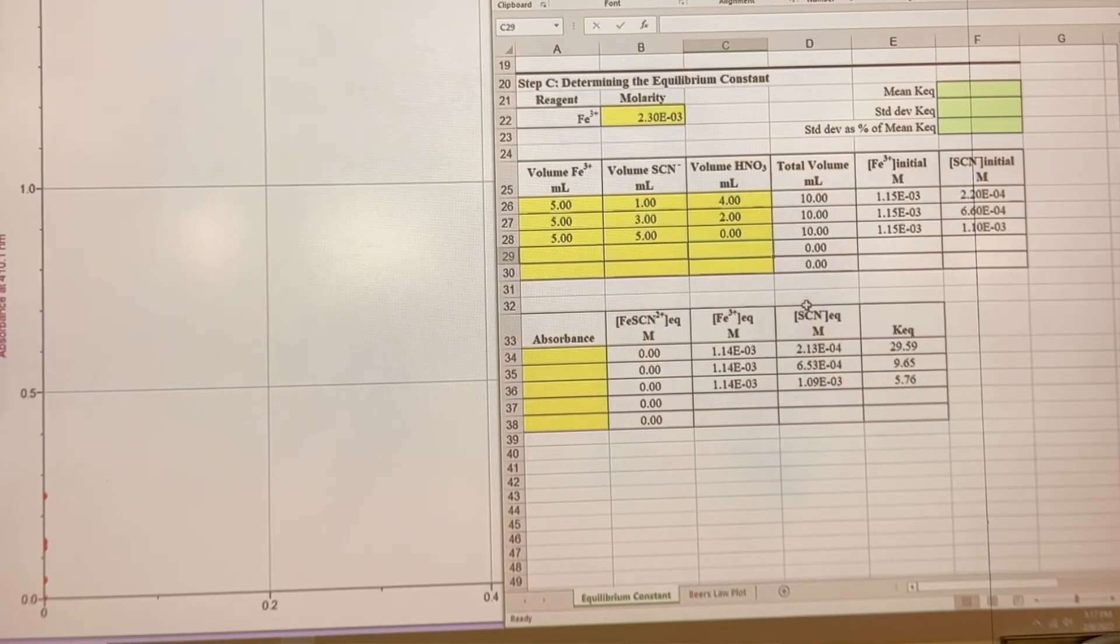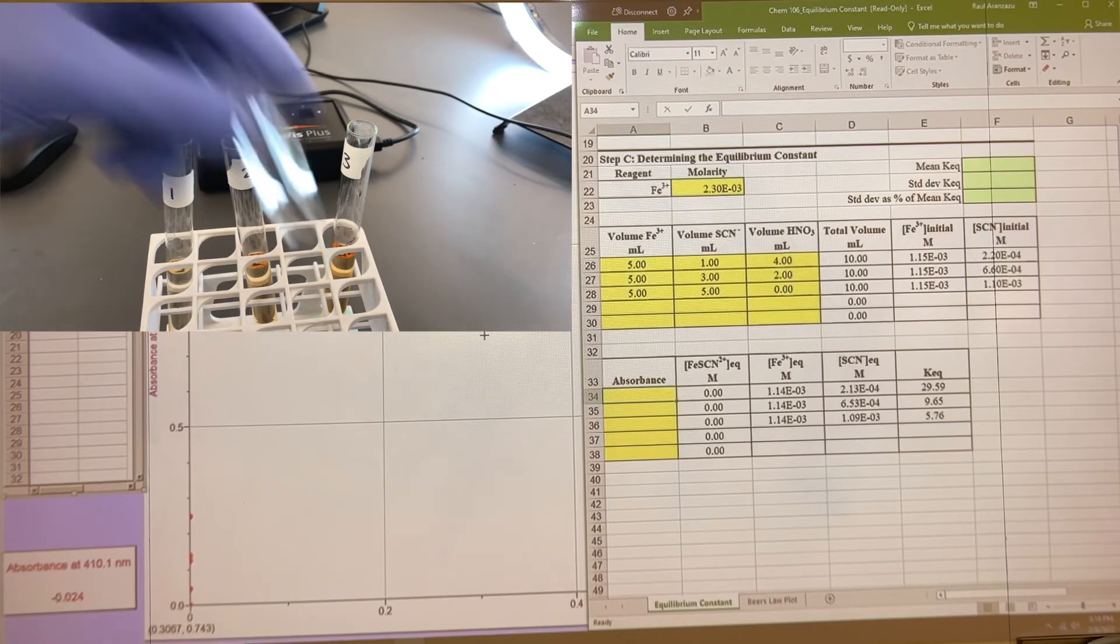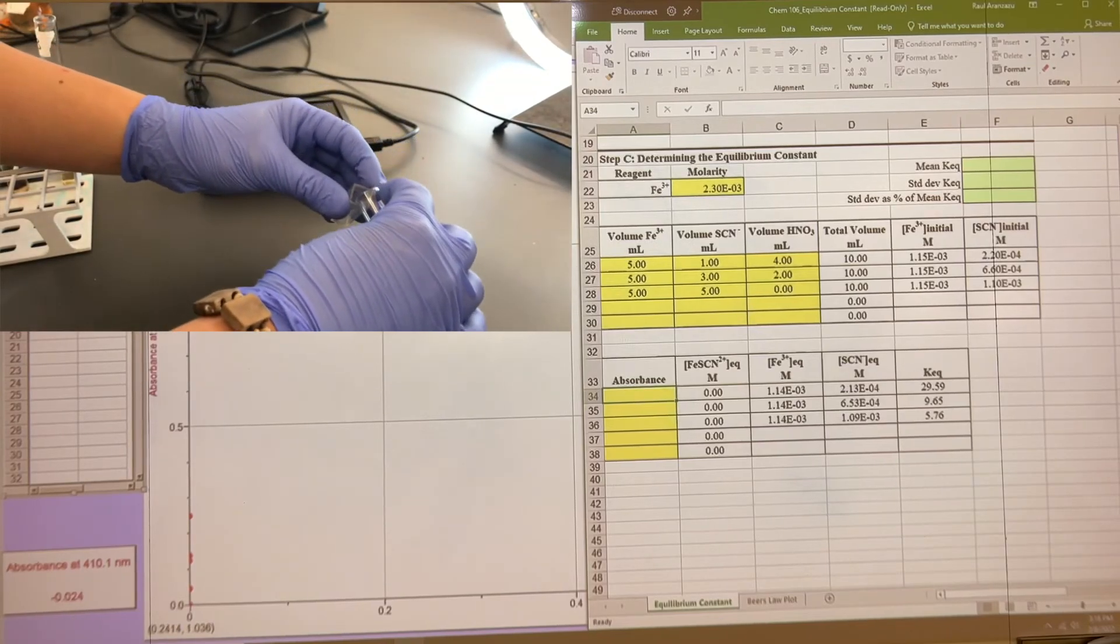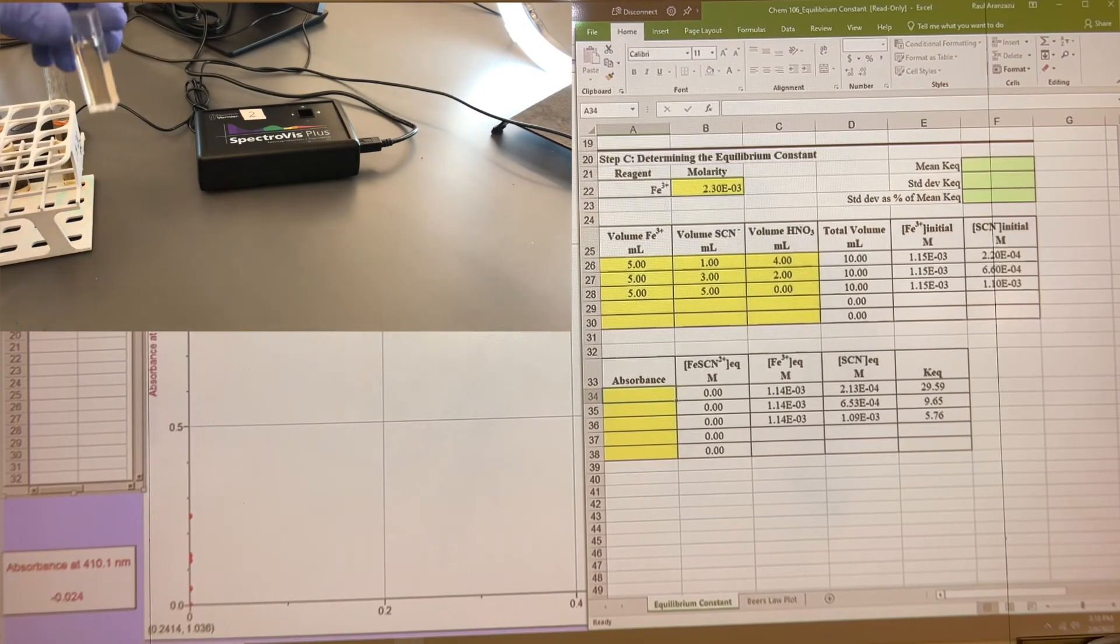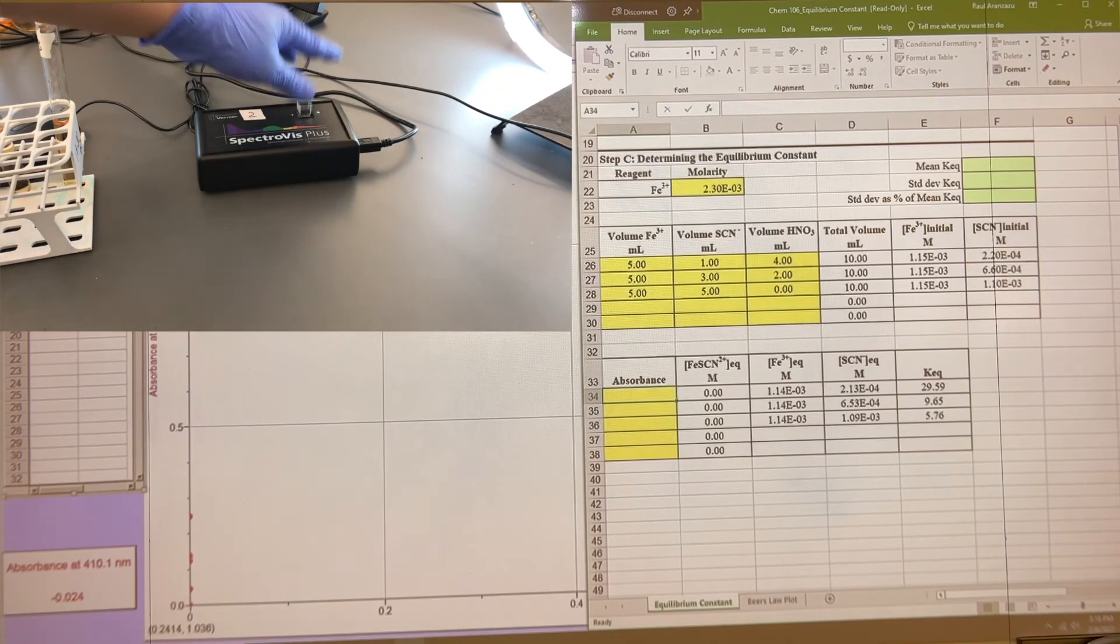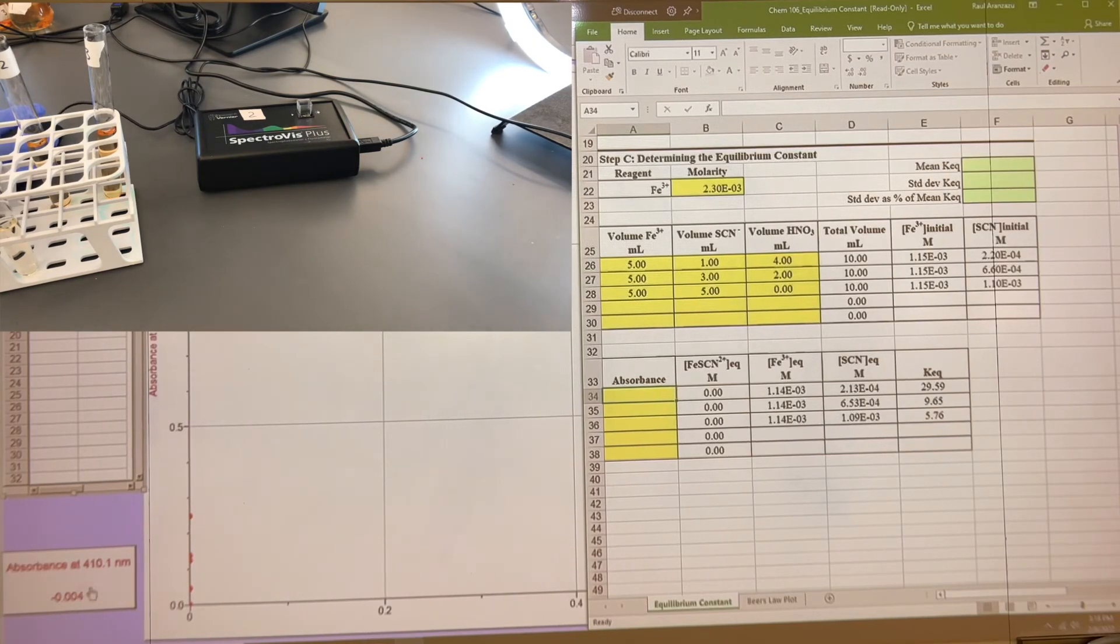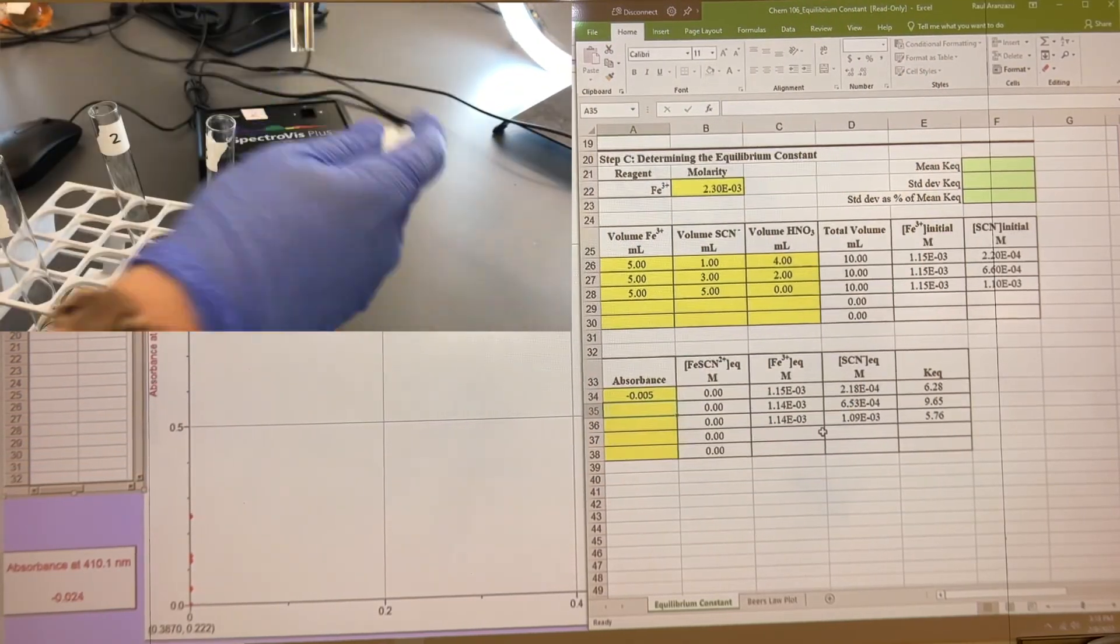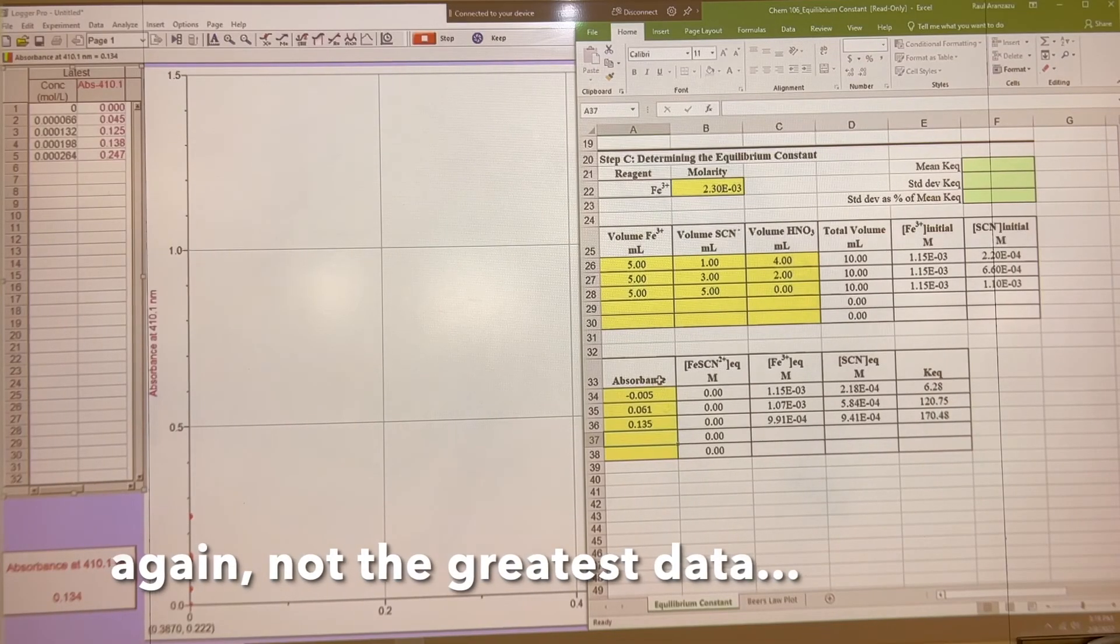For this one, all we really need are just the absorbance values. So, all we're going to do is clean cuvette, take our number one, pour in a little bit here. Back on the rack. Get a kim wipe. Clean it off. Into the spec. And then, all we're looking for is just down here, our absorbance value for these.